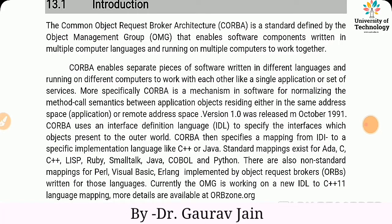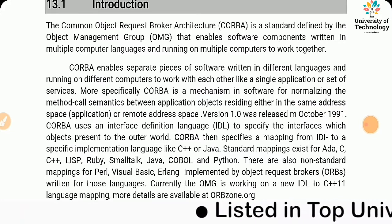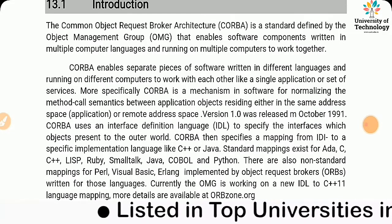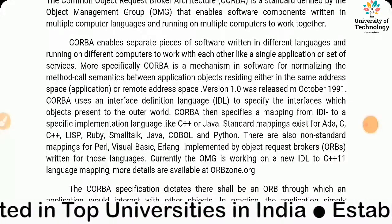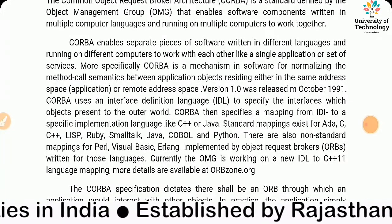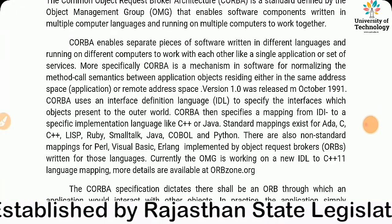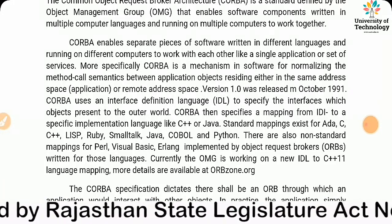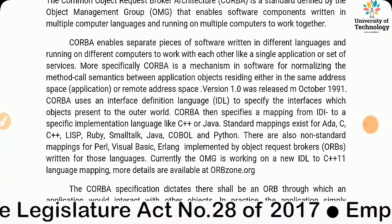CORBA enables separate pieces of software written in different languages and running on different computers to work with each other like a single application or set of services. More specifically, CORBA is a mechanism in software for normalizing the method-call semantics between application objects residing either in the same address space or a remote address space.